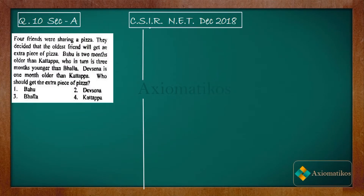Hello dear students, welcome to ExeoMatic course. This video is part of the solution series for CSIR NET December 2018, and we are doing problem 10 of Section A — a problem of general aptitude. Let us have a look: four friends are sharing a pizza and they decided that the oldest friend will get an extra piece of pizza.